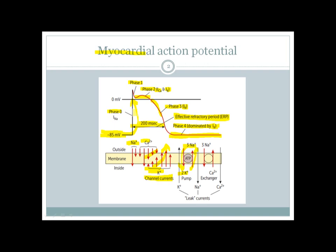To integrate the action potential concept with antiarrhythmic drugs: phase zero — sodium influx — is blocked by class 1 antiarrhythmic drugs, and phase three — efflux of potassium ions — is blocked by class 3 antiarrhythmic drugs. These are the two most common agent classes to remember: class 1 targets phase zero, class 3 targets phase three.